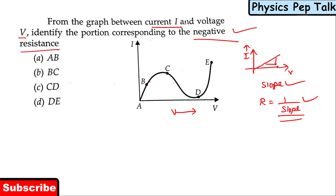From point A to B, current is rising with respect to an increase in voltage — so negative resistance is not possible there. From point B to C, the current is still rising with respect to rise in voltage. But from point C to D, when I increase voltage, the current is reducing. Since R equals V by I, and current is reducing, there is a negative resistance in this region.